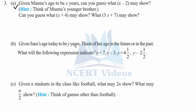Part b: given Sara's age today as y years, what do the following expressions indicate? y plus 7 means her age after 7 years — a future event. y minus 3 means her age 3 years prior to the present — a past event. y plus 4.5 means her age after 4 and a half years. y minus 2.5 means her age two and a half years ago.